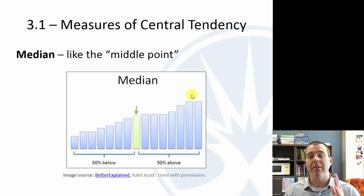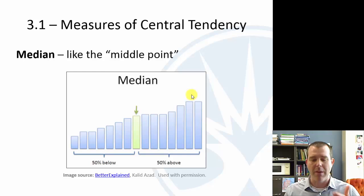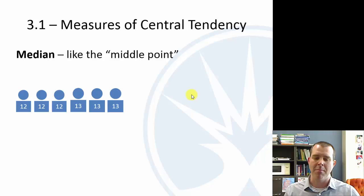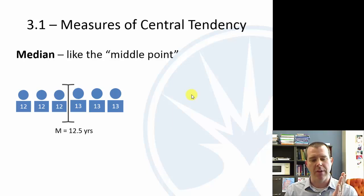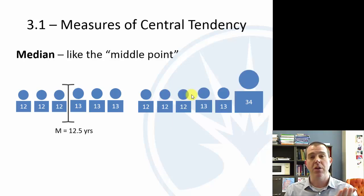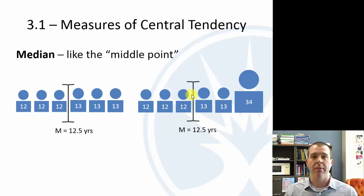The median is basically the one in the middle. There's a graphic here from Khalil Azad illustrating that if you split the data fifty percent and fifty percent, the one in the middle is the median. Looking at our ages — we've got six of them — there's no single observation right in the middle, so we go halfway between them: twelve and a half. And if we add Uncle Joe at age thirty-four, it doesn't change the median, because it didn't change where the middle observation falls.